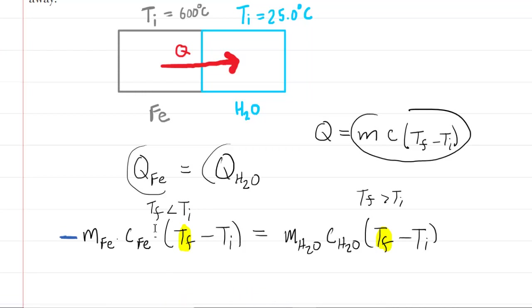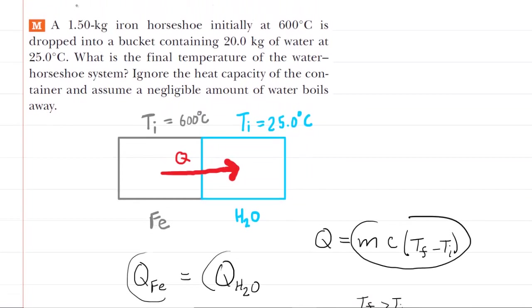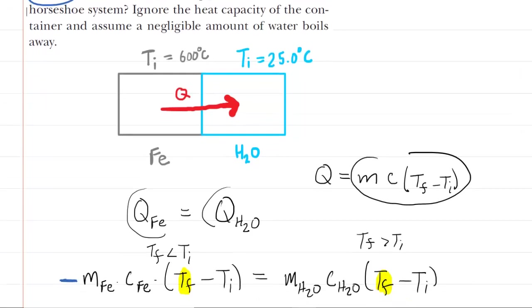So we can now begin to plug in some known values. If we go back up, we know the masses of the iron and of the water. We know the initial temperatures. And we can look up the specific heat capacities. So we'll go ahead and start plugging in some numbers.